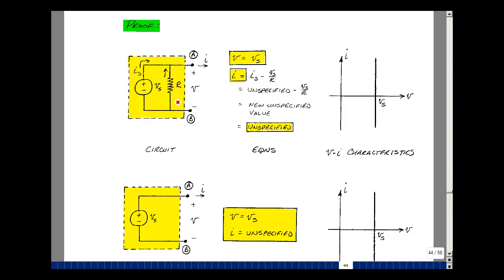And this current is the voltage in this direction divided by R. But that's the negative of V sub S. I then is equal to I sub S and then minus V sub S divided by R.